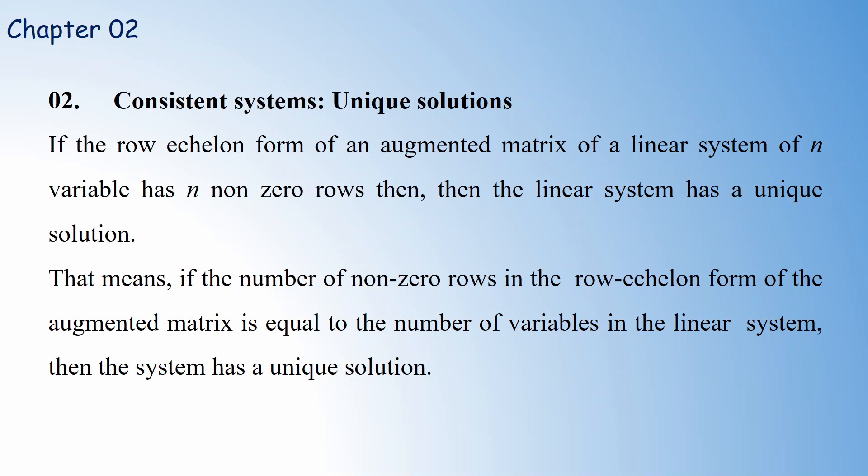For a consistent system — meaning a solution exists — how can you identify a unique solution? If the row echelon form of the augmented matrix for a linear system with n variables has n non-zero rows, then the linear system has a unique solution.